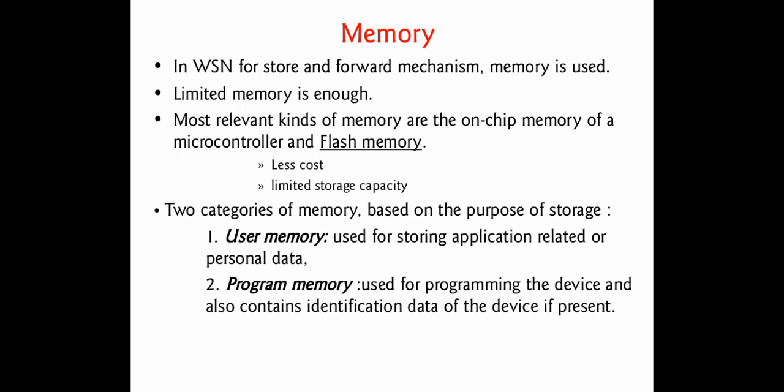Flash memory is made with technologies like floating-gate technology as well as electrically erasable programmable memory technologies. There are two types of memory categories depending upon the storage purpose: user memory and program memory. User memory is used to store application-related personal data, while program memory stores programs and contains identification data of the device if present.